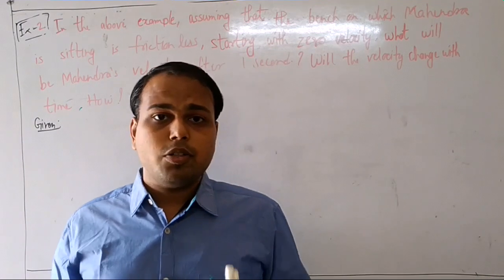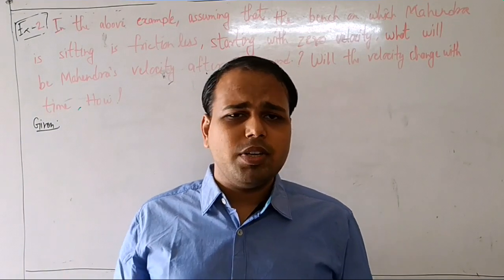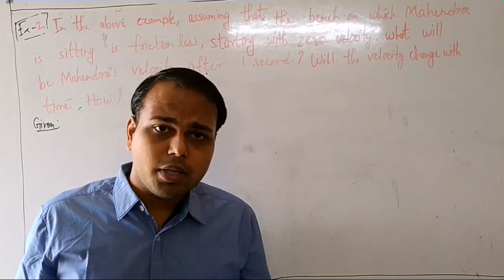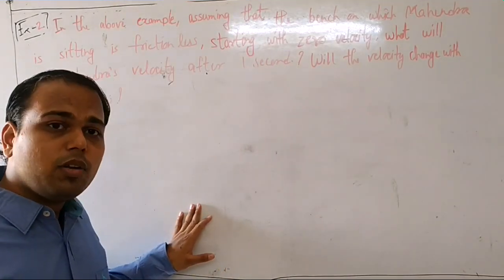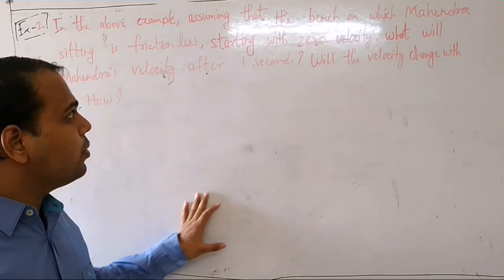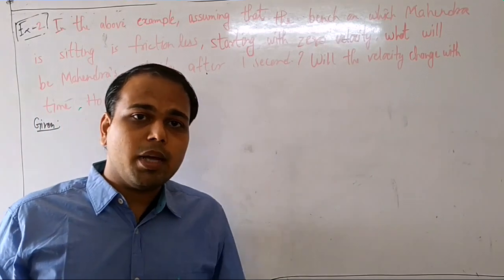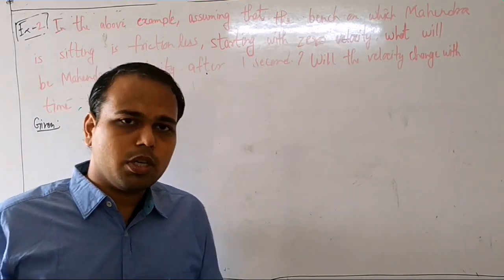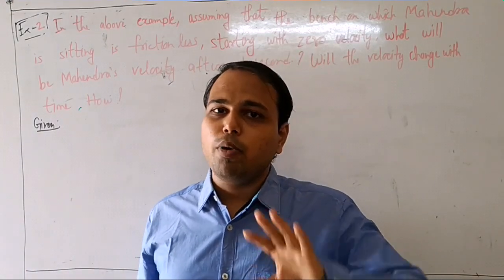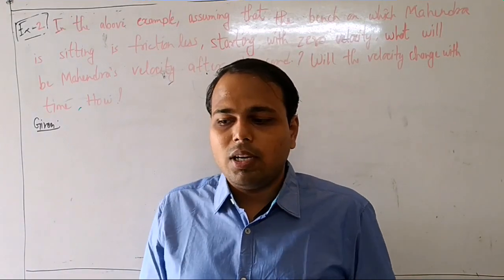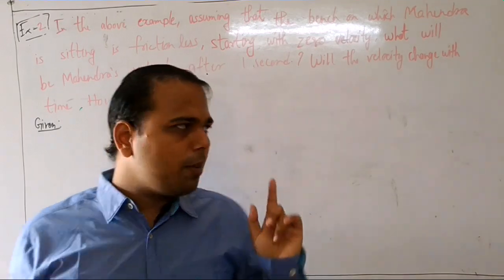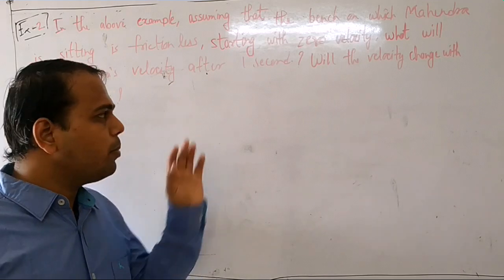We have seen the first numerical. It is very simple. On page number 6, we are looking at the second numerical. The second numerical is a follow-up of the first. The answer from the first numerical will be used here. I will tell you how to solve the numerical step by step.